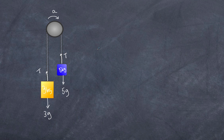The next step is crucial: you write out Newton's second law for each of the objects. Newton's second law says that the net force MA is always equal to the sum of the forces acting on that object — that's what the sigma symbol means, the sum of.